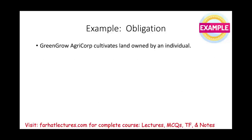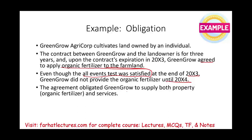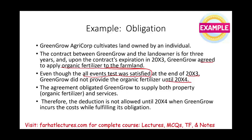Another example: Green Grow Agricorp cultivates land owned by an individual under a three-year contract. Upon expiration in 20X3, the company agreed to apply organic fertilizers to the farmland. Even though the all events test was satisfied at the end of 20X3, the company did not provide the fertilizer until 20X4. Because they had not fulfilled their full obligation, the deduction is not allowed until 20X4 when the obligation was completed.